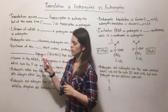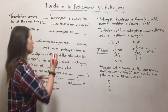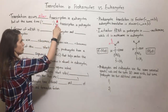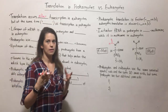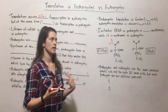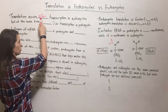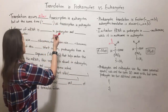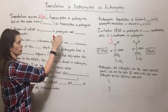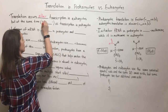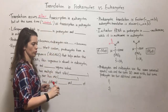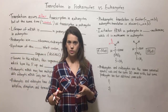Translation occurs after transcription in eukaryotes. Remember transcription is making the RNA using DNA as a template, making that RNA intermediate. But translation occurs at the same time as transcription in prokaryotes. This is referred to as coupled transcription and translation, where they're occurring simultaneously.